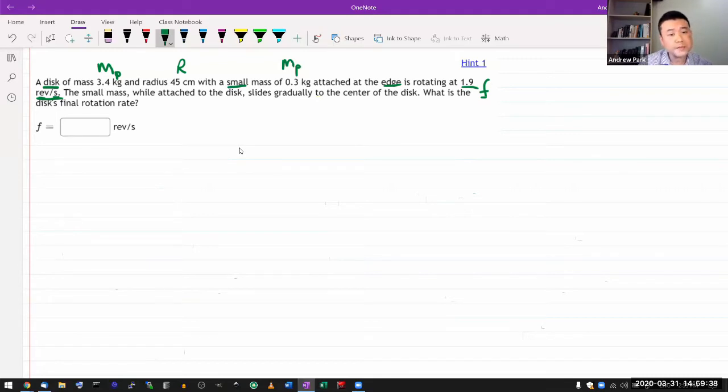The small mass, while attached to the disk, slides gradually to the center of the disk. By the way, if you find this question in OpenStacks University Physics, you will see that our wording is slightly different. The OpenStacks actually says the small mass detaches, and if that's the real question, then the answer is pretty simple: 1.9 revolutions per second.